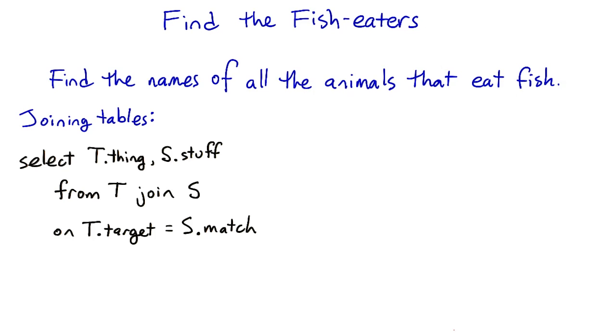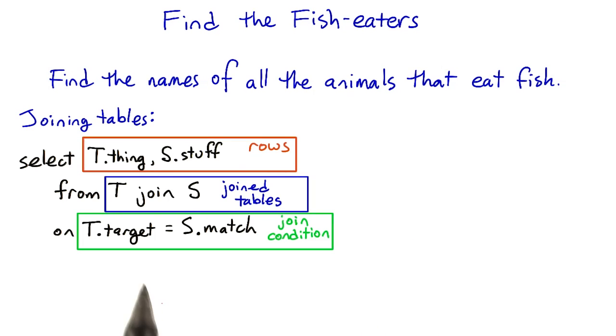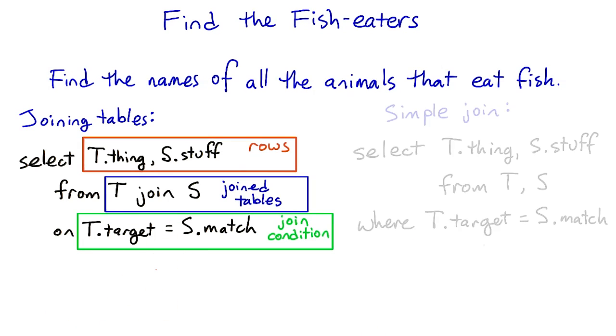Now we saw one syntax for joins in lesson one. But it turns out there's also a shortcut syntax we can use here. The shortcut syntax won't actually use the word join when it lists the joined tables. But this form is actually probably more common in real code.